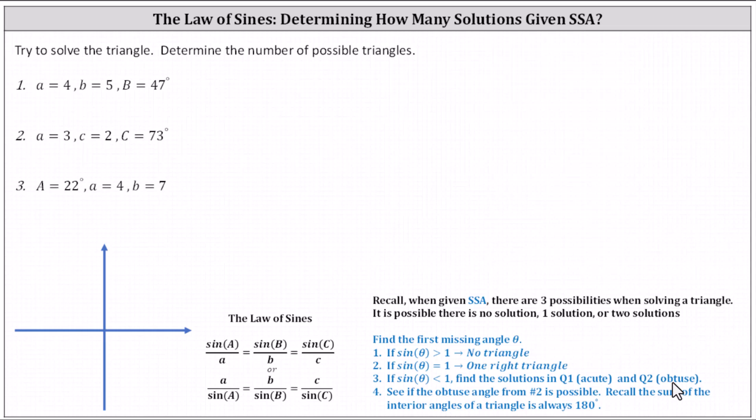The acute angle will always work. The obtuse angle will only work when the sum of the obtuse angle and the given angle is less than 180 degrees. Recall the sum of the interior angles of any triangle is 180 degrees. So if the sum of the two angles is greater than or equal to 180 degrees, there is no possible second triangle.